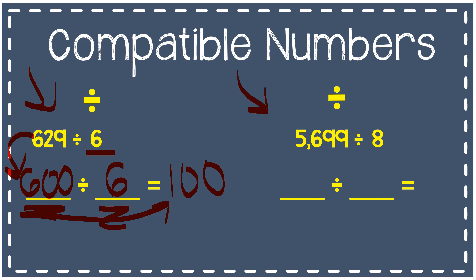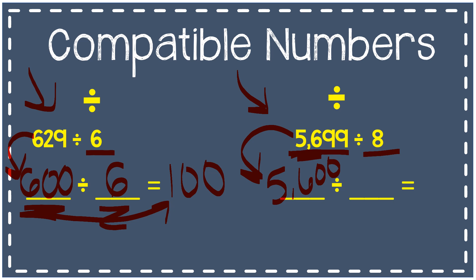Another example: 5,699 divided by 8. I'm going to use compatible numbers to solve this. I want to round 5,699 to a number that is divisible by 8 or compatible with 8. I know that 56 is a multiple of 8, so let's round it to 5,600. 5,600 divided by 8 — these are compatible. 56 divided by 8 is 7, and taking the two zeros at the end gives a final answer of 700. 5,600 is compatible with 8, and I got an answer close to the original.